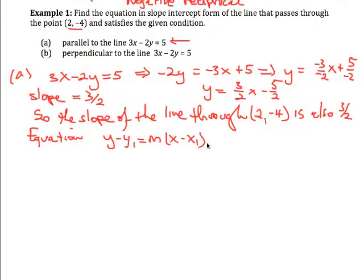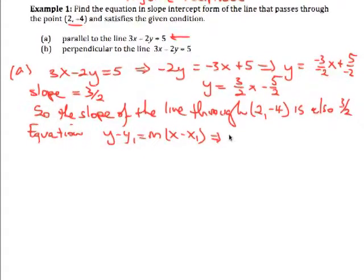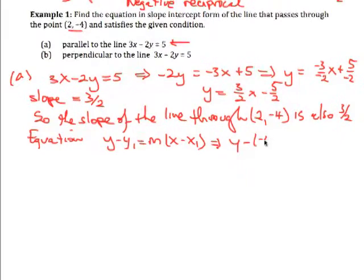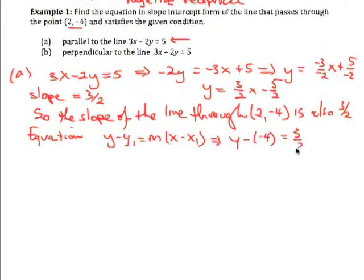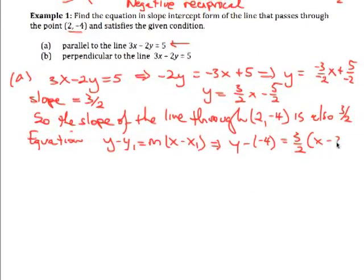So the equation we can find using the point slope form, which is y minus y1 equals m times x minus x1, which implies that we have y subtract the negative 4, this is the point, equals 3/2 times x minus 2.